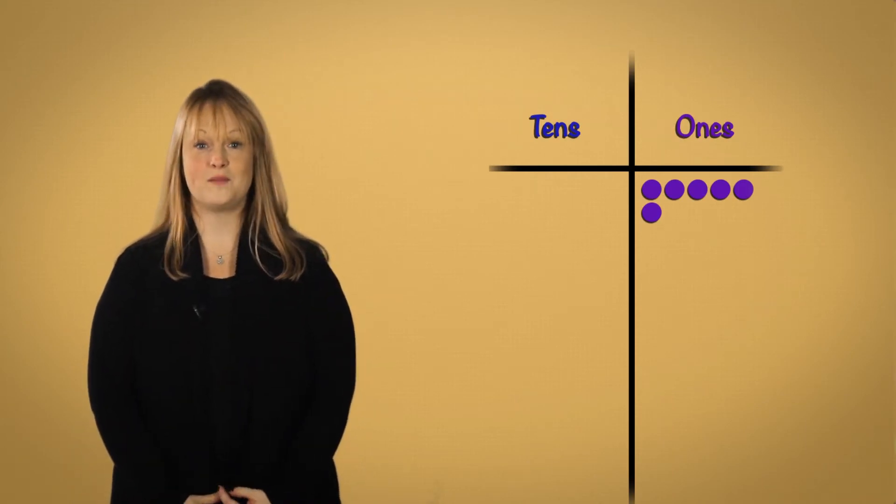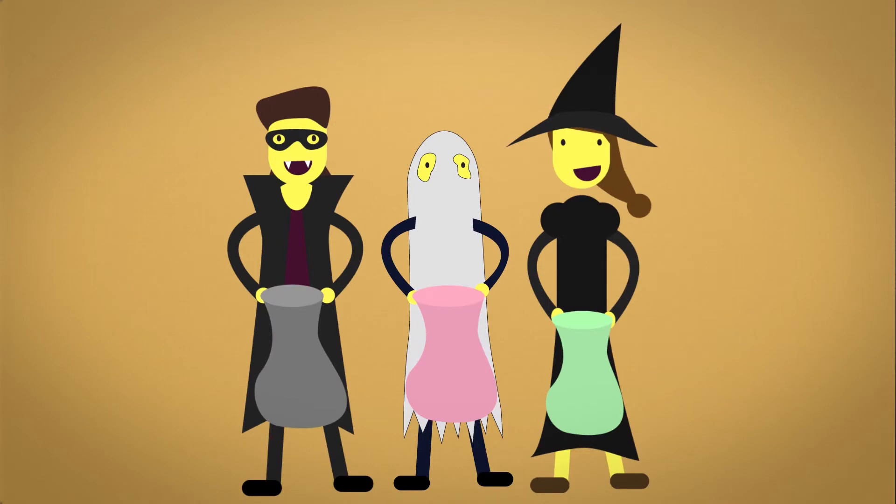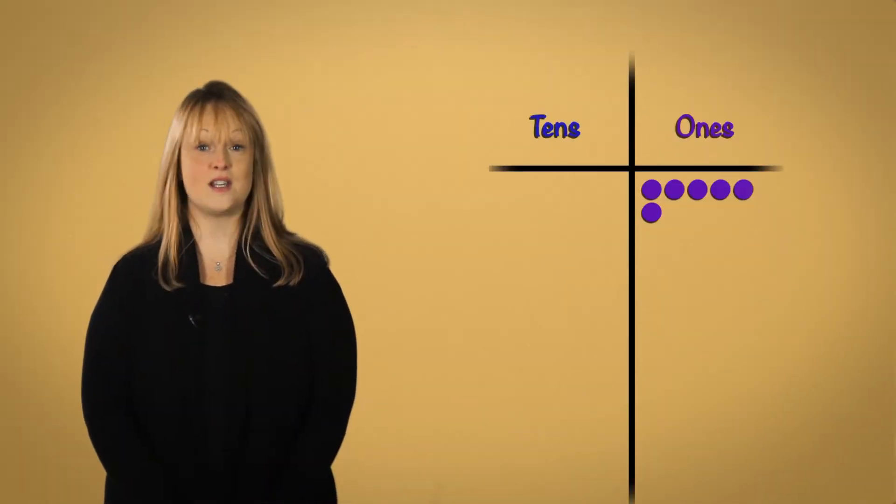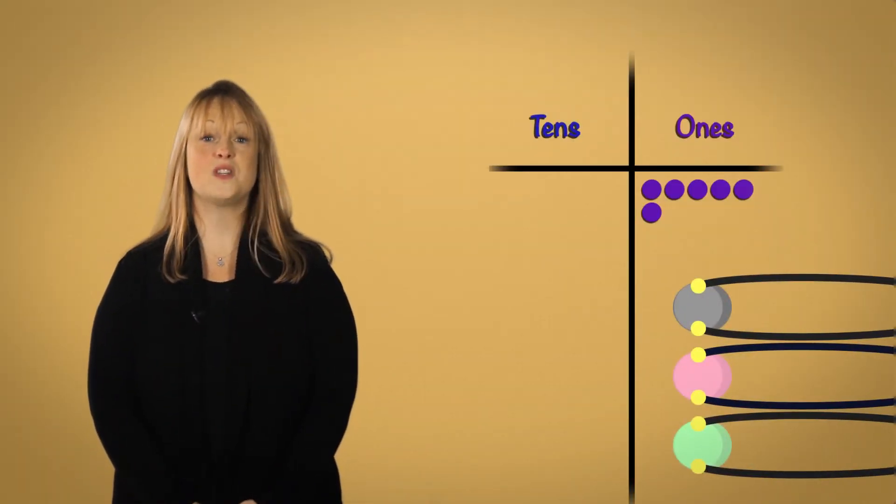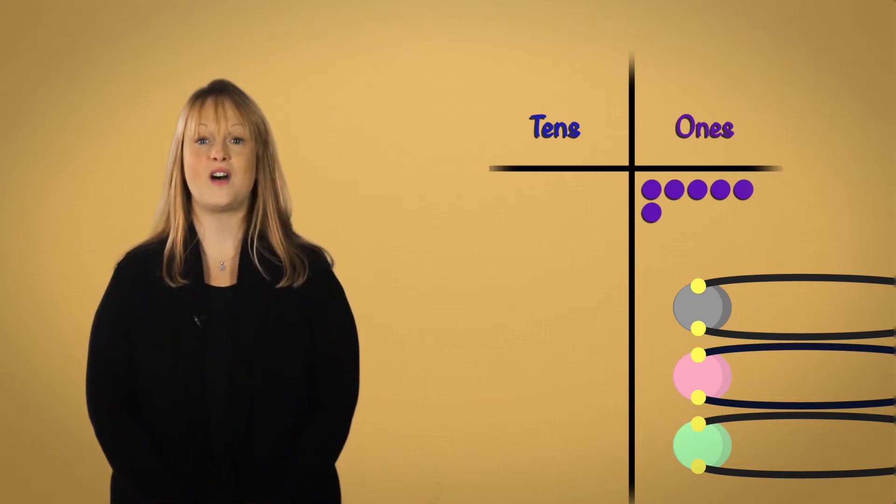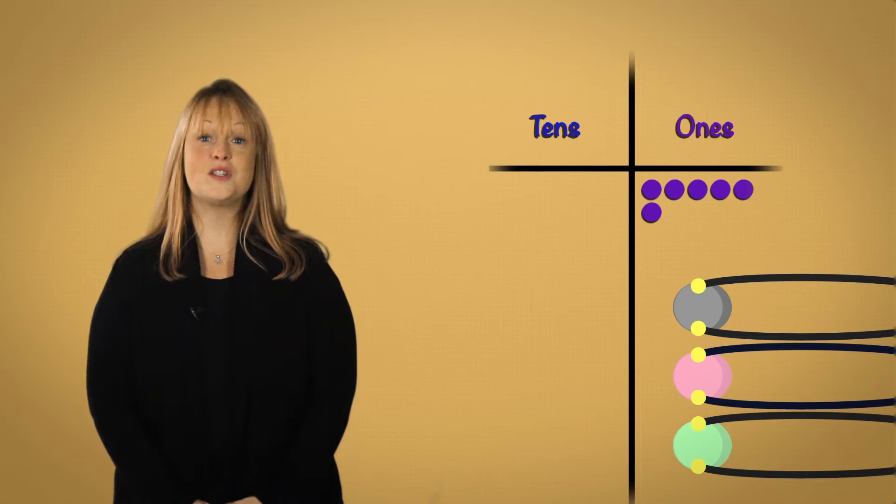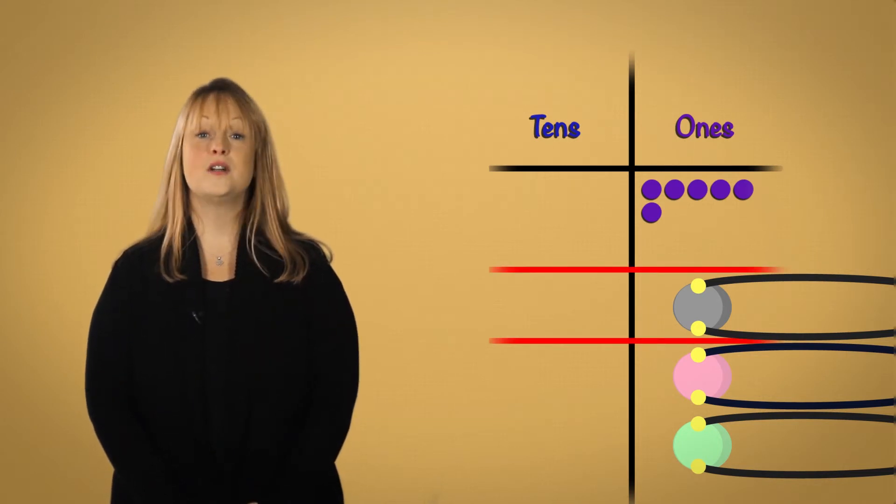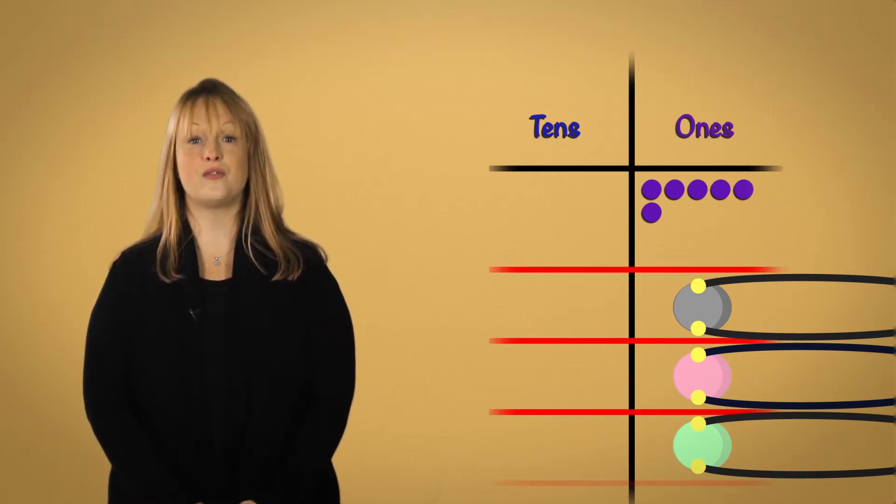Now I want to distribute them to these three trick-or-treaters. Well, each of them has their own bag to be filled. So I'll draw in three places to represent dividing by three. Here's a place for one group, two groups, and three groups.